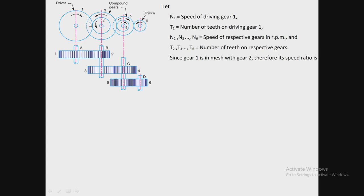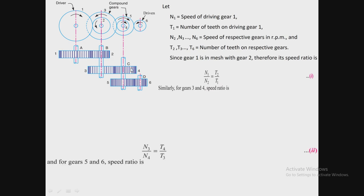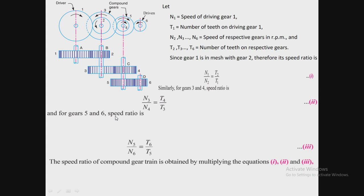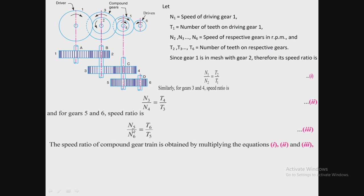When gear 1 and 2 are in mesh, the speed ratio N1/N2 = T2/T1. Since gear 2 and gear 3 are on the same shaft, and gear 3 is in mesh with gear 4, the speed ratio is N3/N4 = T4/T3 (equation 2). Then N4 and N5 are on the same shaft, and N5 is in mesh with N6, so N5/N6 = T6/T5 (equation 3).